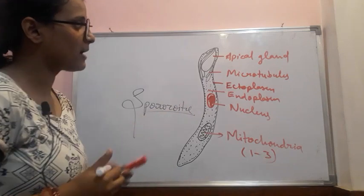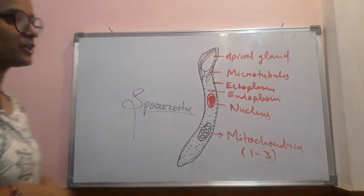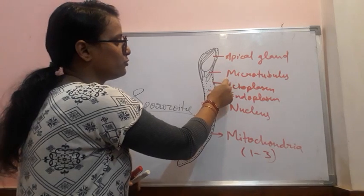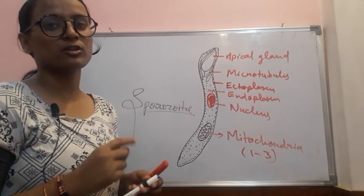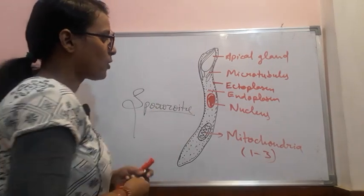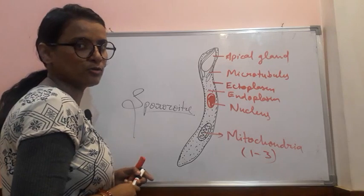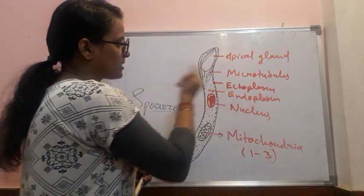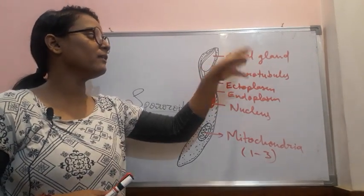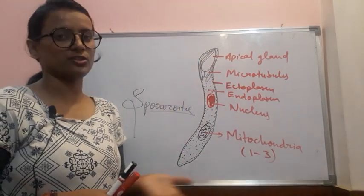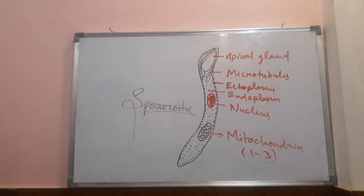This apical gland and microtubules help in the penetration of liver cells. This is a spindle-shaped sporozoite with nucleus, ectoplasm, and endoplasm. The two important structures are the apical gland and microtubules, because they help in penetration of hepatic cells and these glands have some secretions for it.